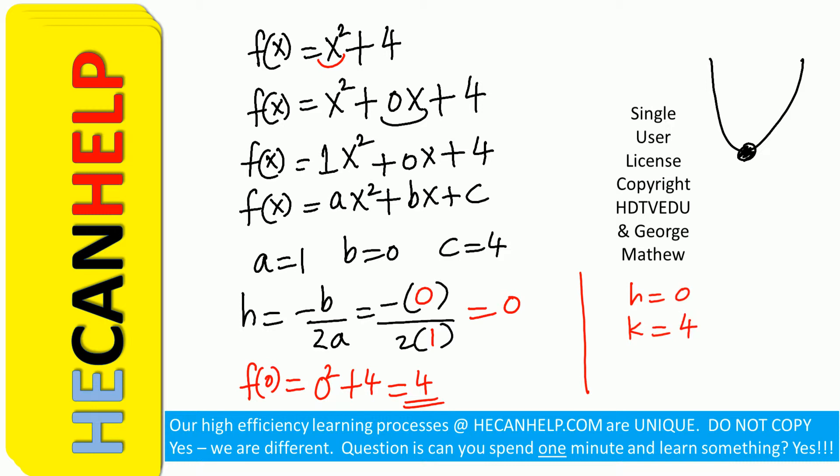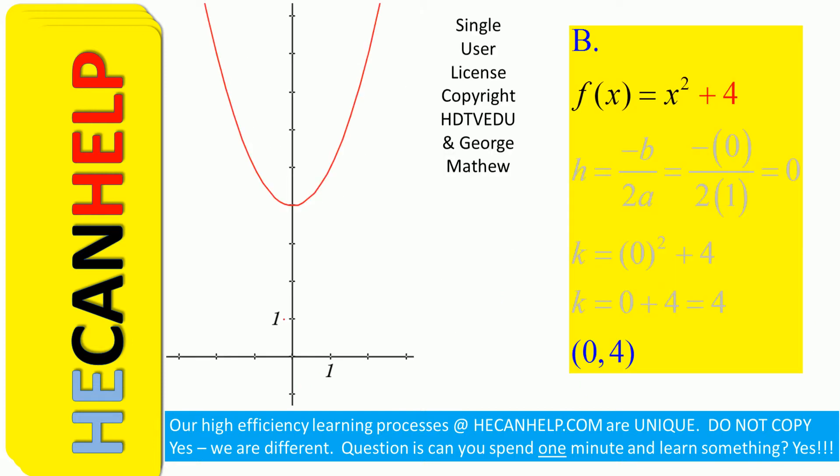How do we get k? You substitute x = h. Remember the relationship between x and y is given by x² + 4. h is x, k is y, because that point is very special—it is the vertex, we call it (h,k). Once you have h, substitute x = h and you get k. The ordered pair for the vertex is (0,4).